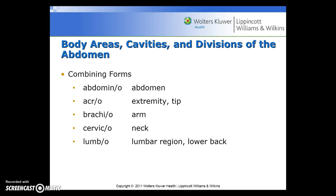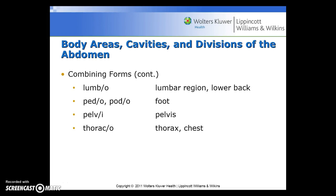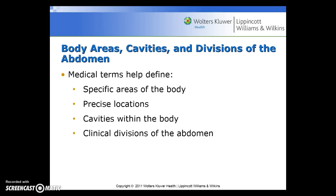Now we move on to body areas, cavities, and divisions of the abdomen. Combining forms to become familiar with include: abdomino for the abdomen, acro for extremity or tip, brachio for the arm, cervico for the neck, lumbo for the lumbar region or lower back, pedo/podo for foot, pelvi for pelvis, and thoraco for the thorax or chest. Medical terms help define specific areas of the body, precise locations, cavities within the body, and clinical divisions of the abdomen.